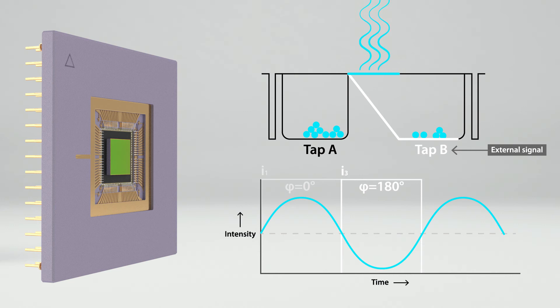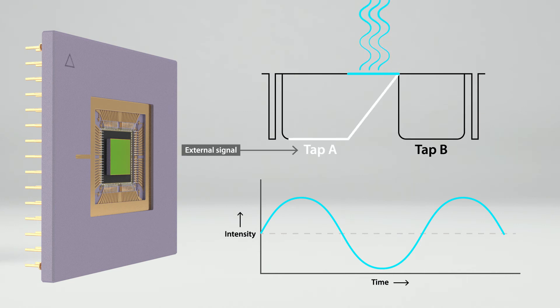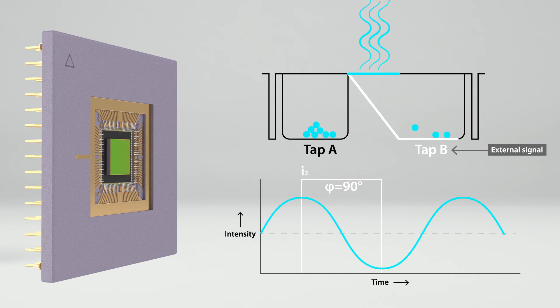The image sensor modulation is shifted relative to the excitation light. Then a measurement is performed at a phase angle of 90 degree. The charge carriers collected in tap A create image I2. Tap B samples the information at a phase angle of 270 degree, creating image I4.